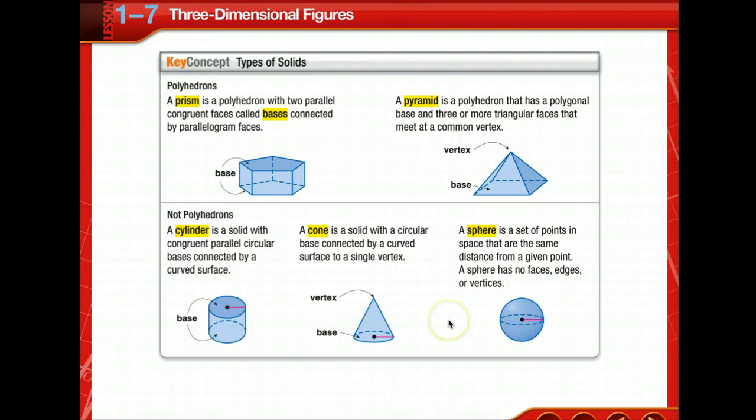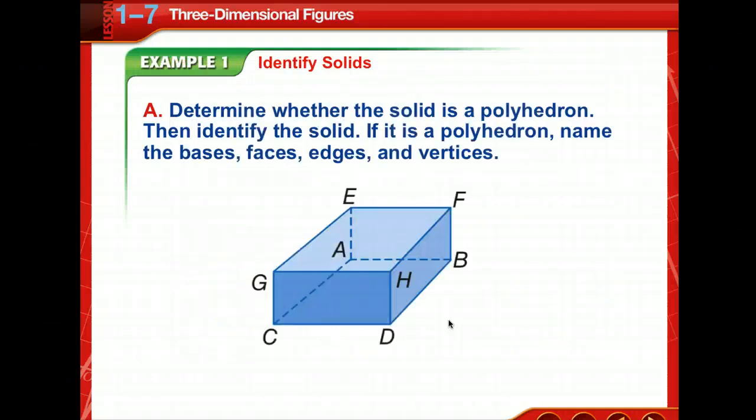On page 67, you'll see examples of all different kinds of polyhedra. That's plural for a polyhedron. They're named by the shape of their bases. So let's learn about how to identify these solids. We're to determine whether this solid is a polyhedron, then identify the solid. If it is a polyhedron, we're going to name the bases, faces, edges, and vertices. It might be a good idea to redraw this figure because it's going to disappear here in a minute. So pause for a moment and draw the figure.